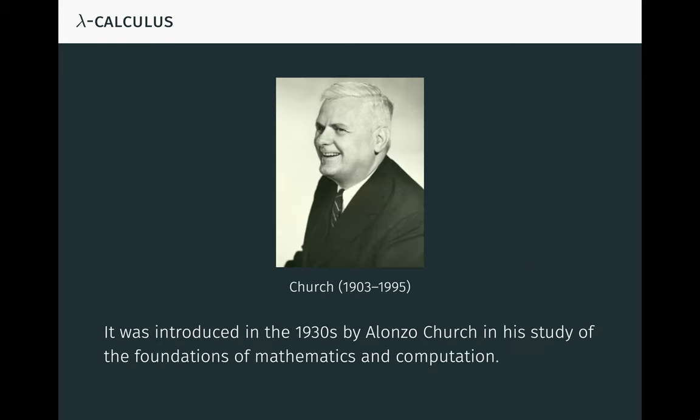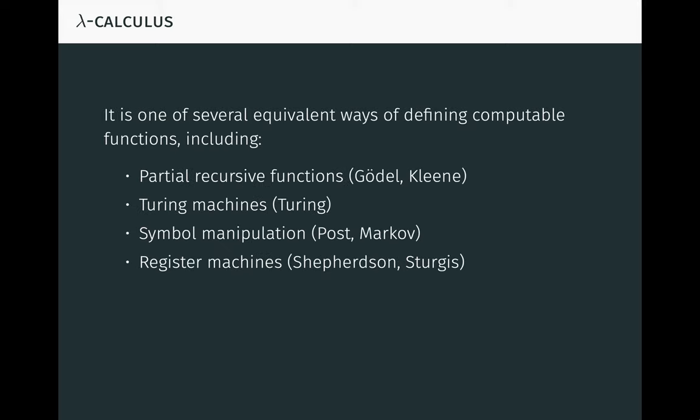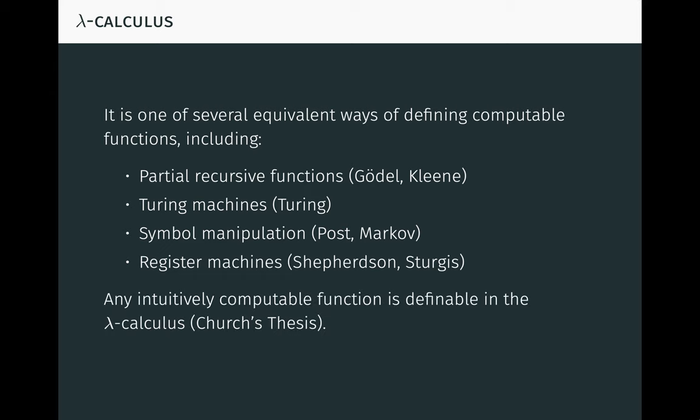To provide just a bit of historical context here, the lambda calculus was introduced in the 1930s by Alonzo Church in his study of the foundations of mathematics and computation. It's important to note that the modern stored program computer didn't exist at this time, so this was a theoretical notion of computation. It's actually just one of many equivalent ways of defining computable functions. Some other approaches are seen here. Amazingly, all of these different approaches yield the same class of computable functions. This lends support to the claim that any function that we intuitively think is computable is actually definable in the lambda calculus. This claim is known as Church's thesis.